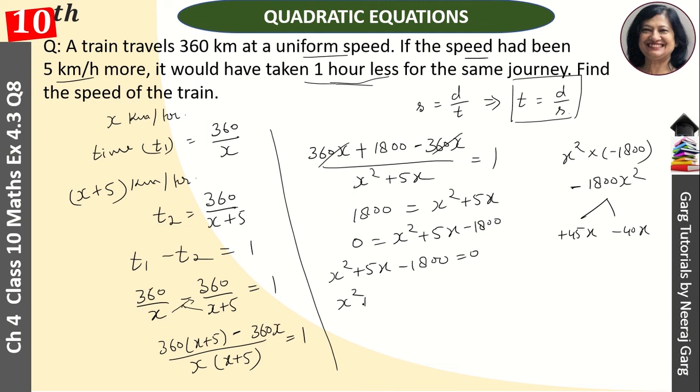So, here we have factors. x square plus 45x minus 40x minus 1800. That is equal to 0. So, here we have x plus 45 and x minus 40. That is equal to 0.